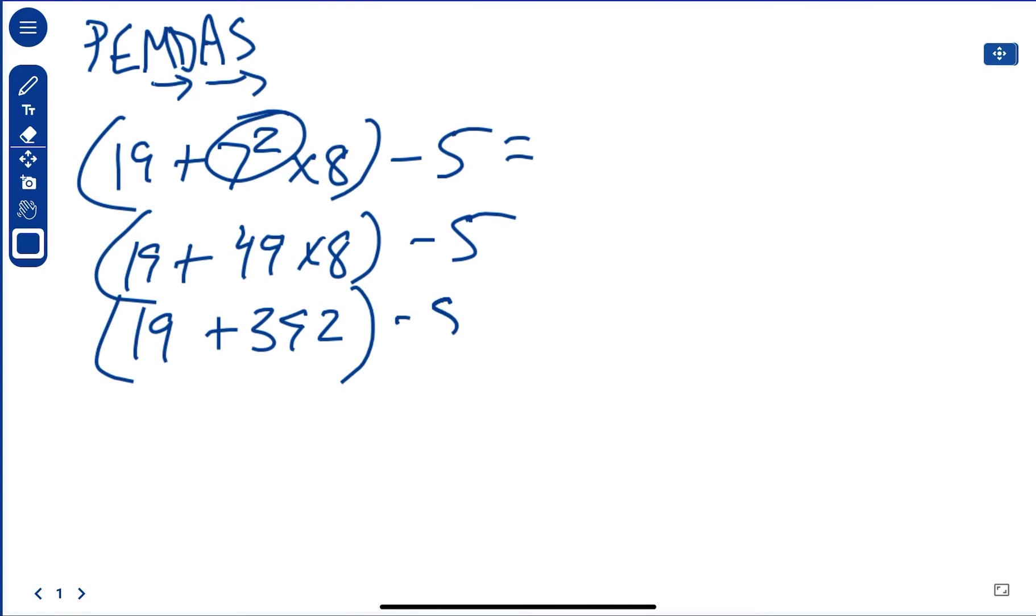392, and then we're going to say 392 plus 19, and that would be 411 minus 5, so that would be 406.